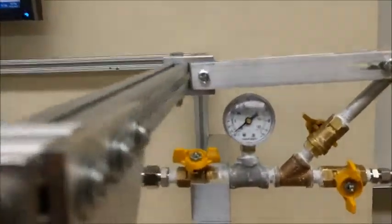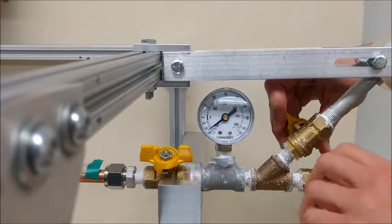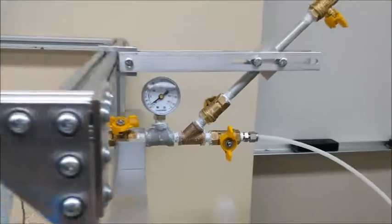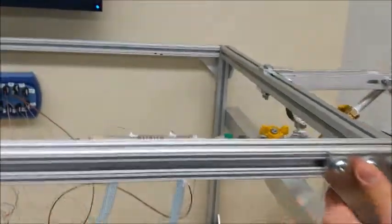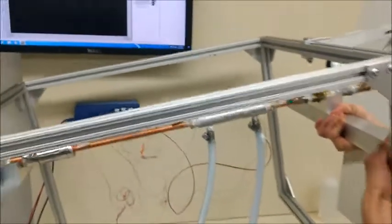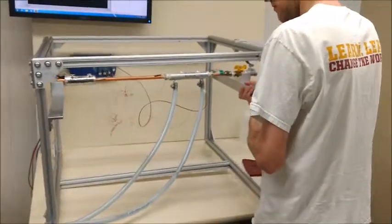Now we're going to load the working fluid into the heat pipe. We're going to do this by opening up the bottom valve of the measuring pipe and then lifting up and moving the heat pipe a little bit to try and get the fluid to go down.